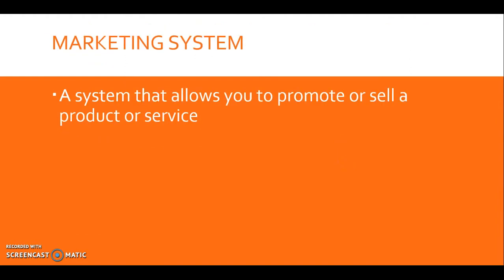A marketing system is a system that allows you to promote or sell a product or service. All you need to do is set up the system and allow it to run for you. Think of it like a microwave oven — you plug it in and it heats up the food for you, or like a television you turn on and it provides entertainment. A marketing system is a piece of technology that helps you run your business automatically, so you don't have to put much work or effort into it.